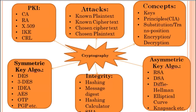Asymmetric key algorithms use different keys for sender and receiver. If the sender uses a public key, then the receiver uses a private key, and vice versa. Asymmetric key algorithms include: RSA, DSA (Digital Signature Algorithm), Diffie-Hellman, Elliptic Curve, and Knapsack.